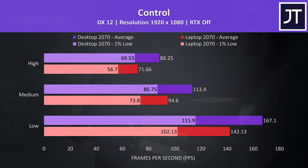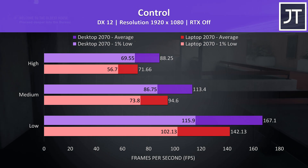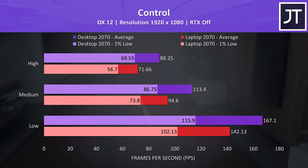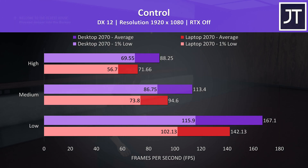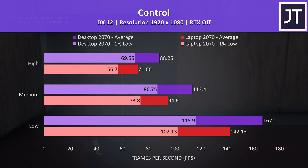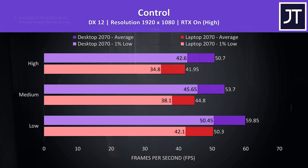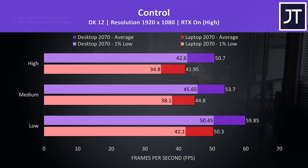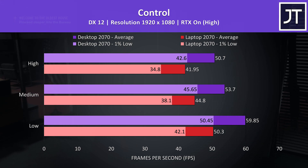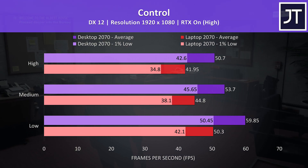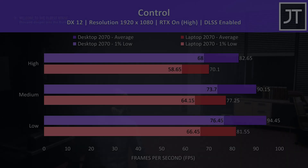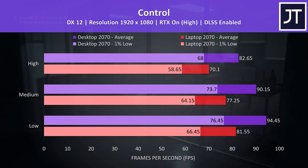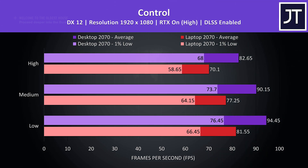Control was tested by walking through the same part of the game on both machines, and as a more GPU-heavy title the desktop PC was 23% faster than the laptop at max settings — one of the biggest differences out of all titles tested. With RTX enabled there was a similar 21% boost to average FPS at high settings, though the 1% low from the PC was now better than the averages from the laptop. When DLSS was enabled, the desktop was around 18% faster at high settings, and the differences to 1% low weren't as large.